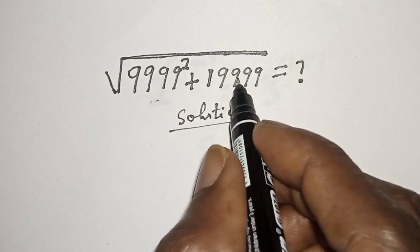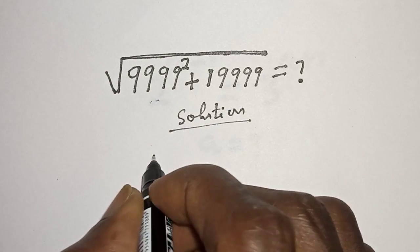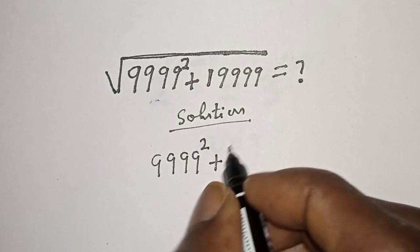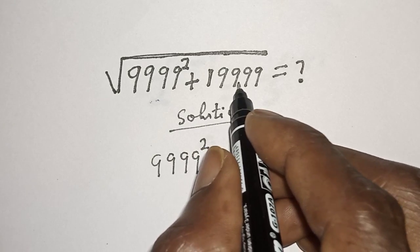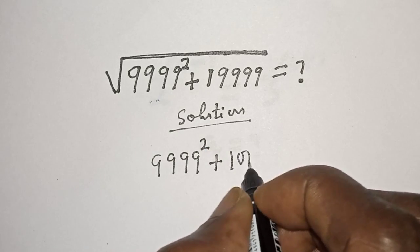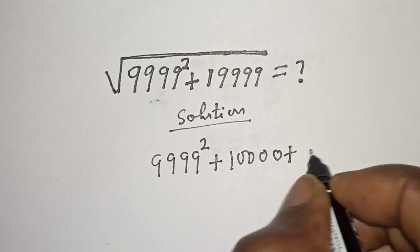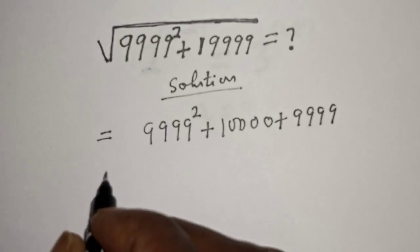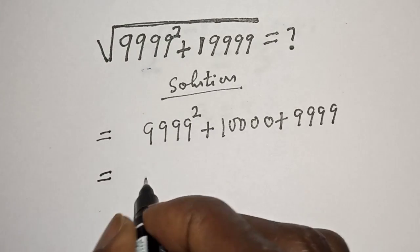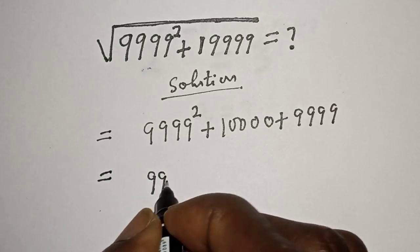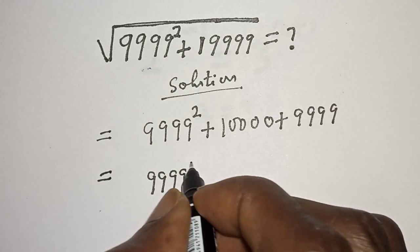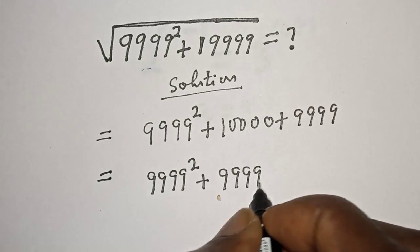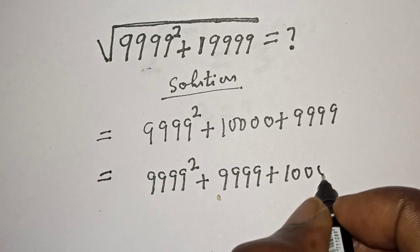Now let's work with what we have. First, we have 9,999 squared plus 19,999, which can be written as 9,999 squared plus 9,999 plus 10,000. Let's rearrange this as 9,999 squared plus 9,999 plus 10,000.